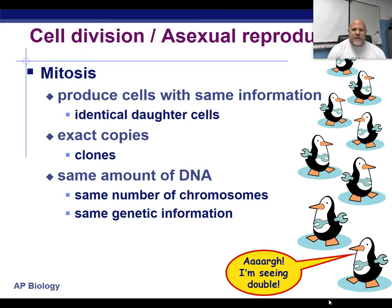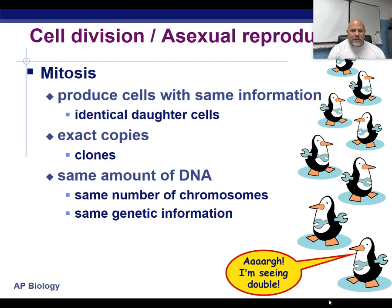A lot of species can reproduce asexually, and they do this in various ways. Bacteria do it through binary fission, protists will do it through mitosis, and some organisms will do something called parthenogenesis, which is where an organism develops from an unfertilized egg.